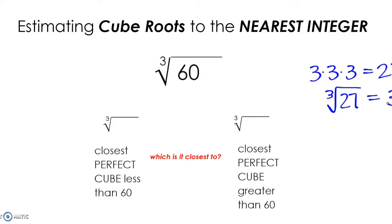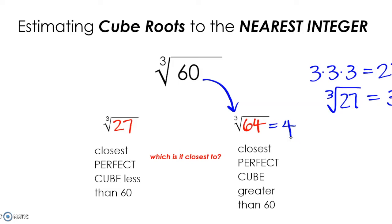Let's use that same idea with the cube root of 60. 60 is not a perfect cube, but the closest perfect cube that is less than 60 is going to be the cube root of 27. And then the next largest perfect cube is going to be the cube root of 64. Since 60 is closest to 64 and the cube root of 64 is 4, we can estimate the cube root of 60 to the nearest integer to be 4.